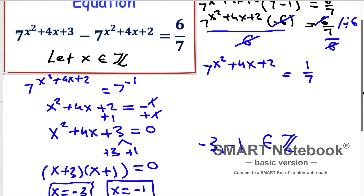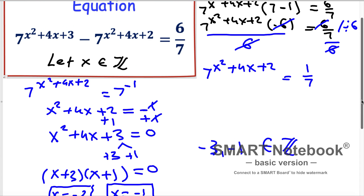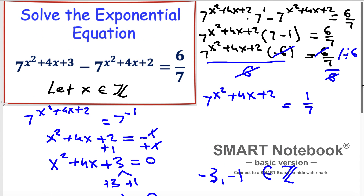So we have found the two solutions that satisfy this equation: x = −3 and x = −1. You can check both of these solutions by substituting back — I'm leaving that verification for you to do.